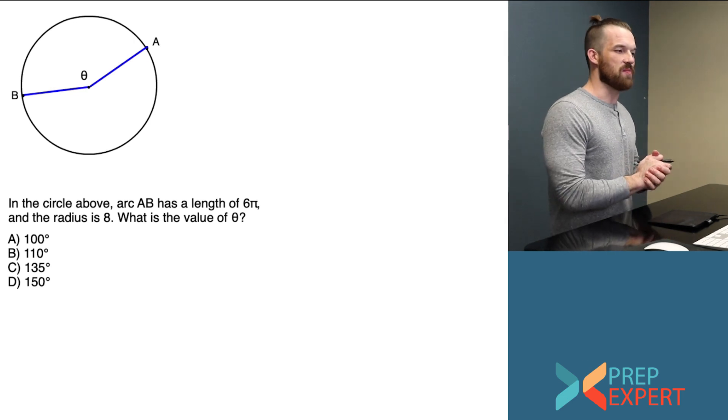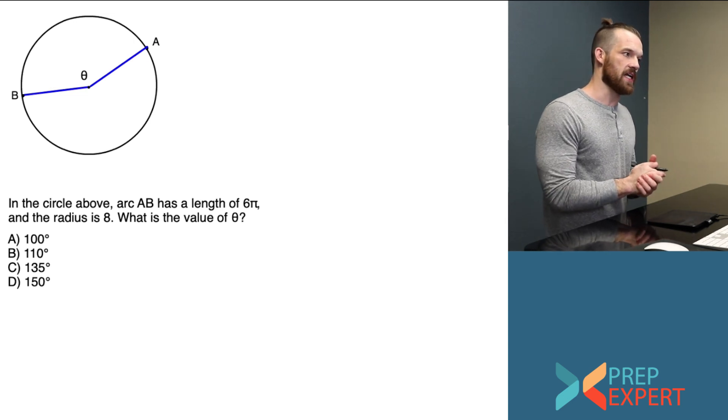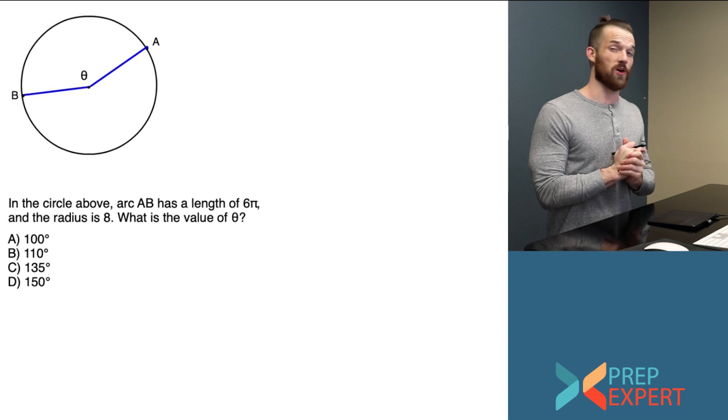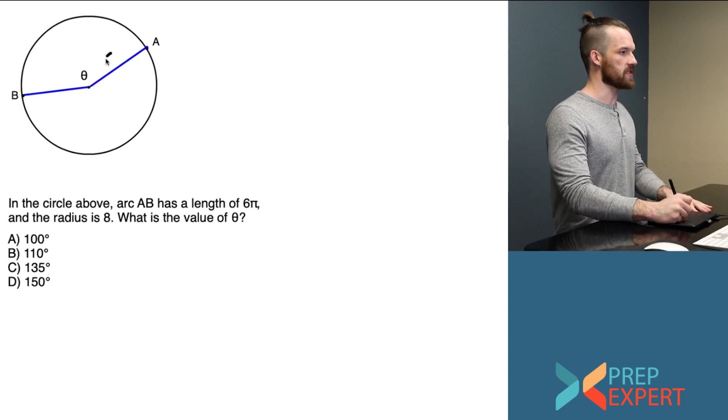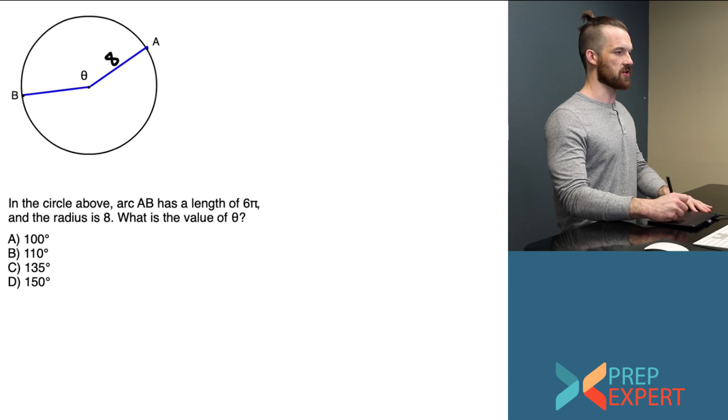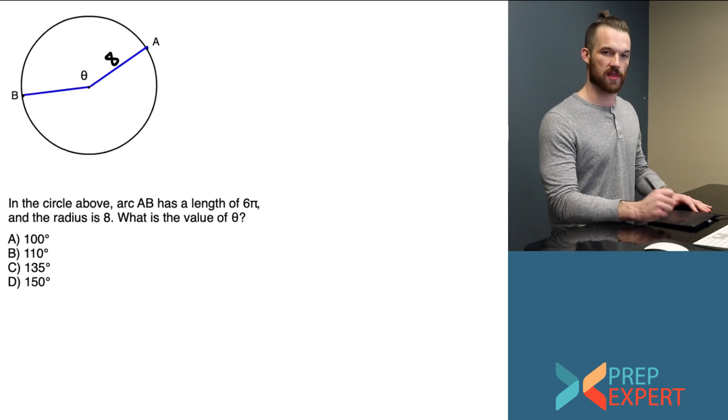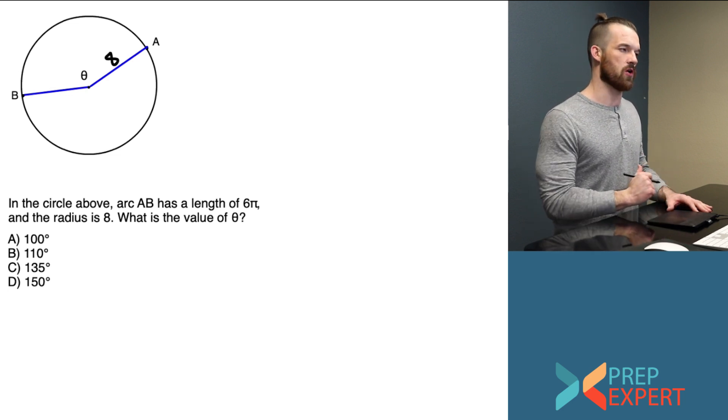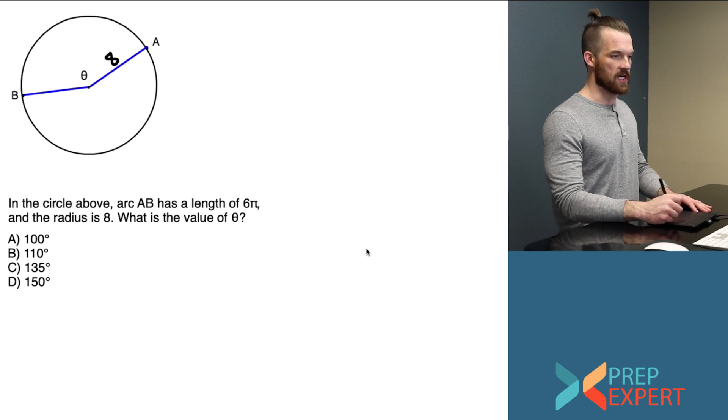In the circle above, arc AB has a length of 6π and the radius is 8. What is the value of theta? So the first thing I'm going to do is label the radius with its length. It's always a good idea to mark things that are important on the diagram as soon as we know them.